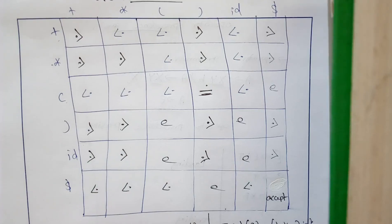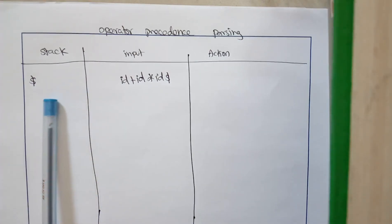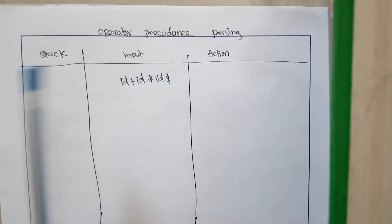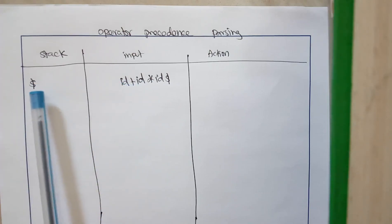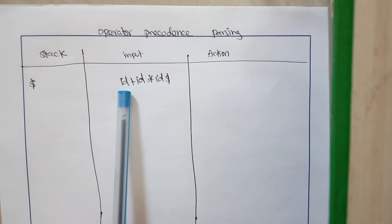This is the final table we are going to use for our parsing. We are going to consider the input as id plus id star id, and we usually end the input using the dollar symbol. Dollar acts as the end of the input and the starting element of the stack. Initially we have only dollar in the stack, and now we are going to compare the stack element with the input element — here it is dollar and here it is id.